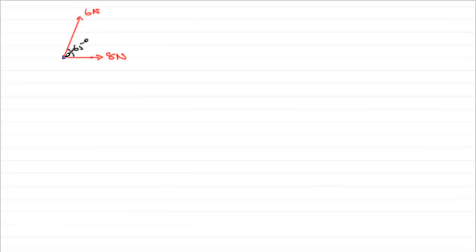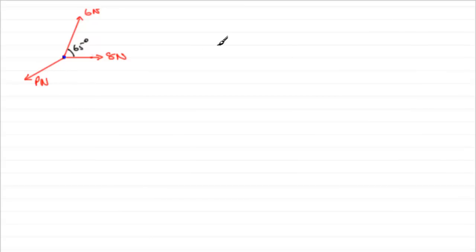Now this particle is going to want to clearly move out somewhere. There will be a resultant force acting somewhere in between the 8 newtons and the 6 newton force. To keep this in equilibrium, I would need to apply a force in the opposite direction to that resultant — let's say it's P newtons. What angle would that make with this dotted line? We'll call that angle theta. So if this particle is in equilibrium under these three forces, what would P newtons be and what would angle theta be?